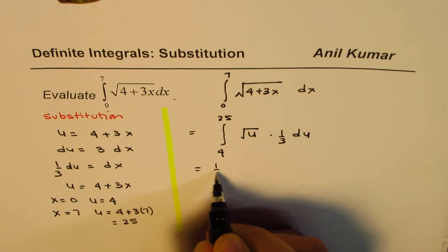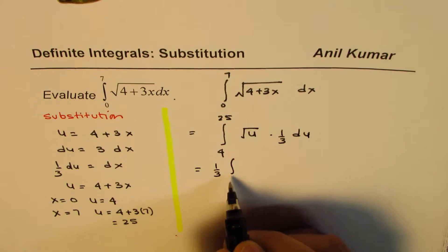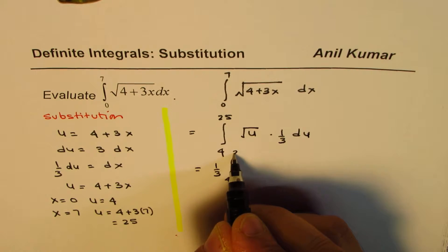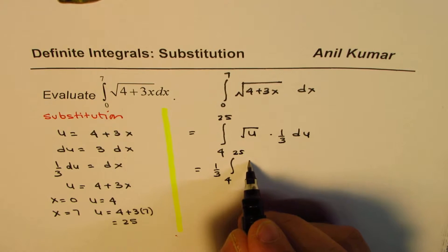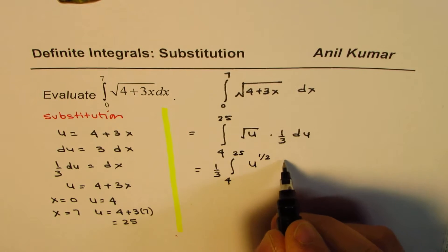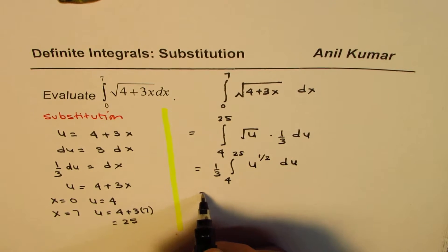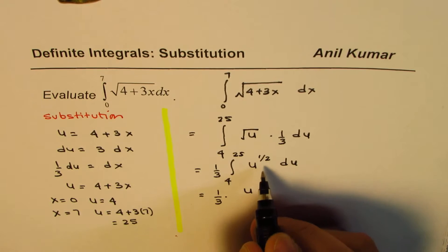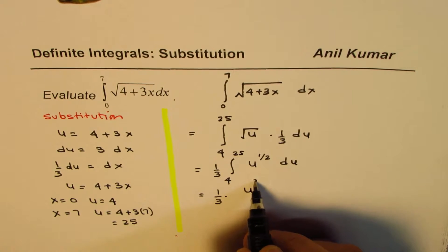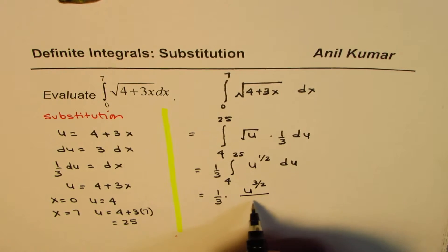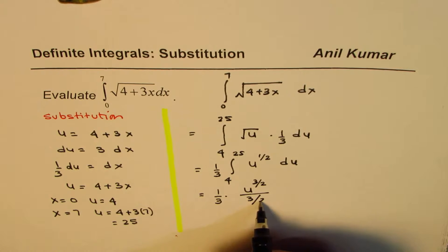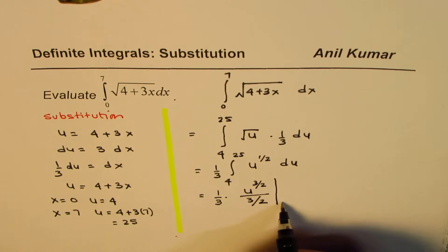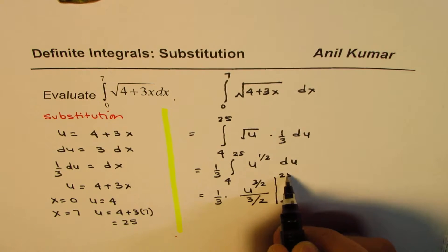This could be written as 1 over 3, integral of 4 to 25, u to the power of half du. And the integral is 1 over 3 times u to the power of 3 over 2, over 3 over 2, from 4 to 25.